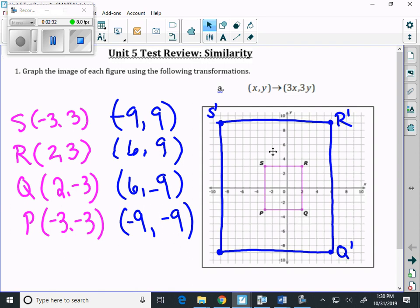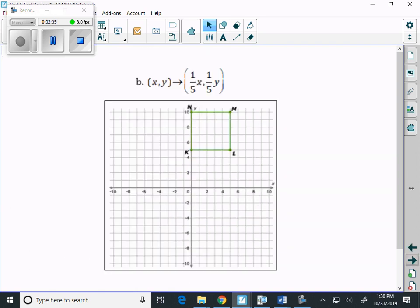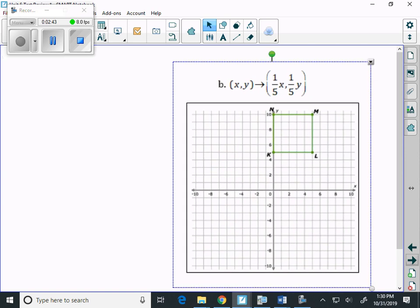Same idea on 1b. This time we're dilating, but we're going to make the value smaller. x, y maps to 1 fifth x and 1 fifth y.